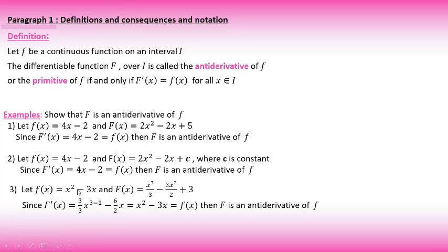Example 3: f(x) and capital F(x) are as given. Taking the derivative of x³/3: the power becomes the coefficient, and we subtract 1 from the power — multiplied by this, giving 6 from the exponent minus one. The final answer confirms: derivative of capital F equals small f. Final result: capital F is the antiderivative of small f.